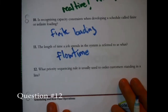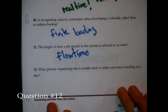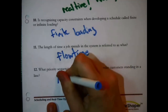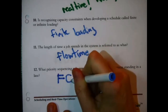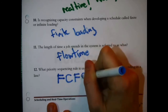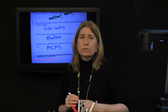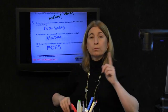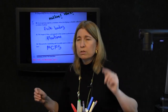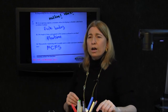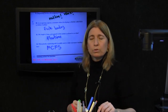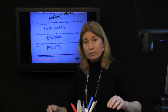Question 12: What priority sequencing rule is usually used to order customers standing in a line — famous abbreviation FCFS? First come, first serve. In many cultures around the world, including the United States, if people are arriving and joining a line, the priority sequencing rule is assumed to be first come, first serve. The first one there is at the head of the line.